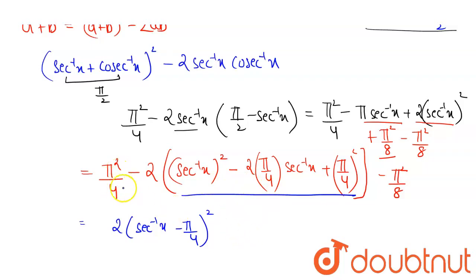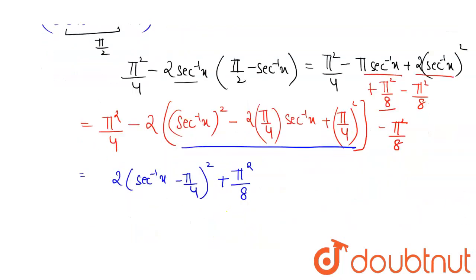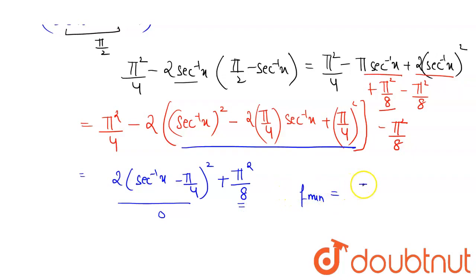Now pi squared by 4 minus pi squared by 8 gives plus pi squared by 8. When the squared term becomes 0, this reaches its minimum value. So f minimum equals pi squared by 8. This completes our solution.